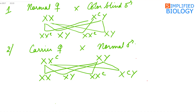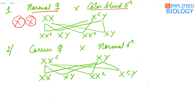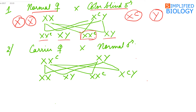Now, let's look at different combinations of crosses in sex-linked inheritance. In the first cross, a normal female marries a colorblind male. The normal female will produce gametes all of the same type, while the colorblind male will produce two types of gametes: one having the colorblind gene and the other having the Y chromosome. In this case, all the offspring produced will be normal, but the females carry the gene in heterozygous condition and are referred to as carrier females.